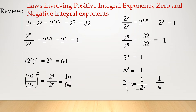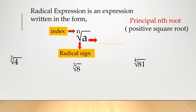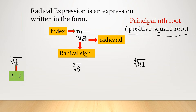Now, let's recall radical expressions. That's the radical sign; this is the index, and this is the radicand. When simplifying, we are just going to get the principal nth root — the positive square root. So if I have the square root of 4, that is equal to 2, meaning what number raised to 2 gives the answer 4? So that is 2.